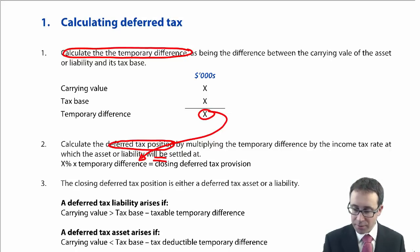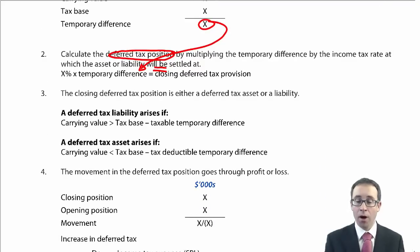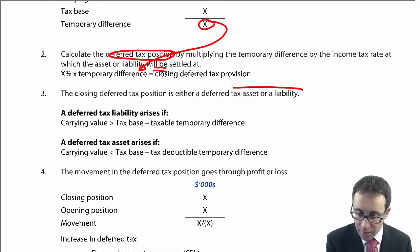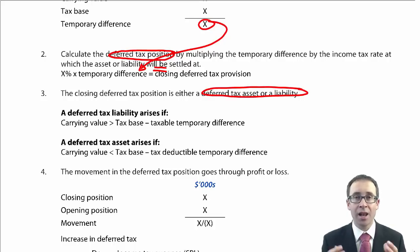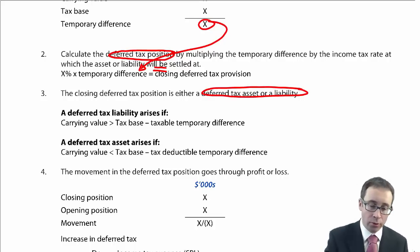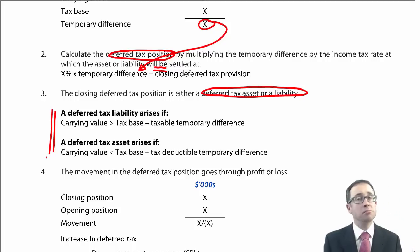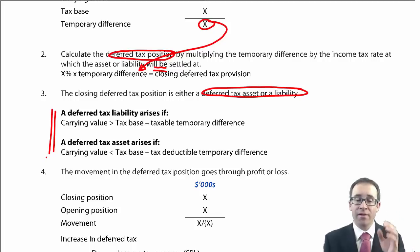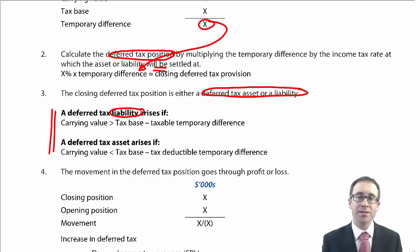Once you've got your deferred tax position, you determine whether it is a deferred tax asset or a deferred tax liability. Remember the rule: if the carrying value is greater than the tax base, then you have a deferred tax liability.